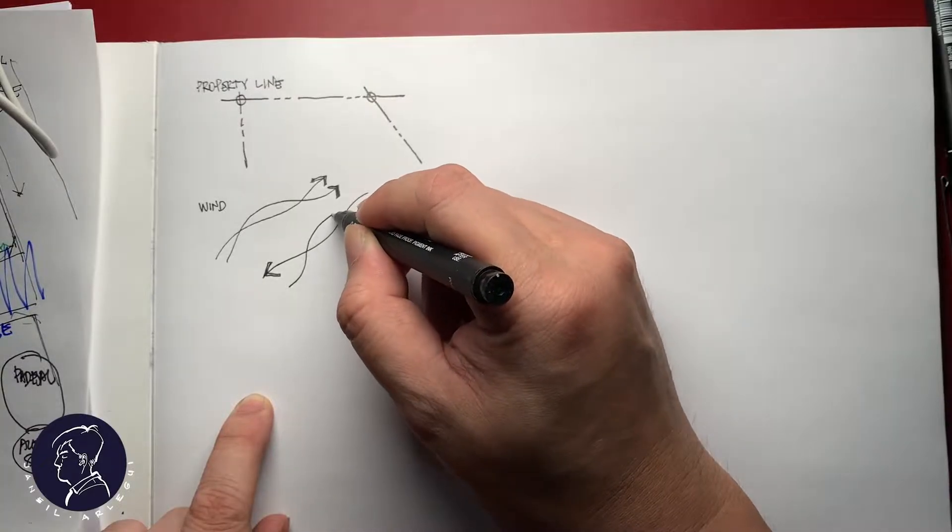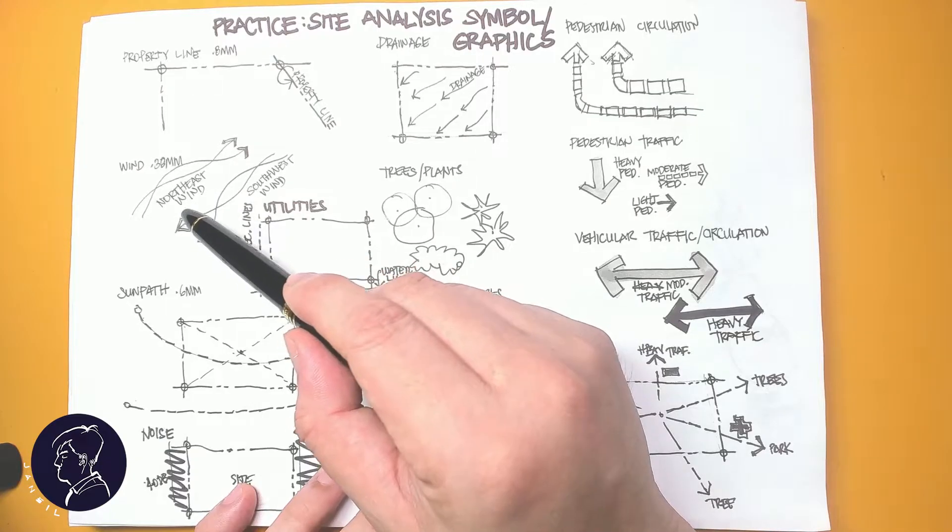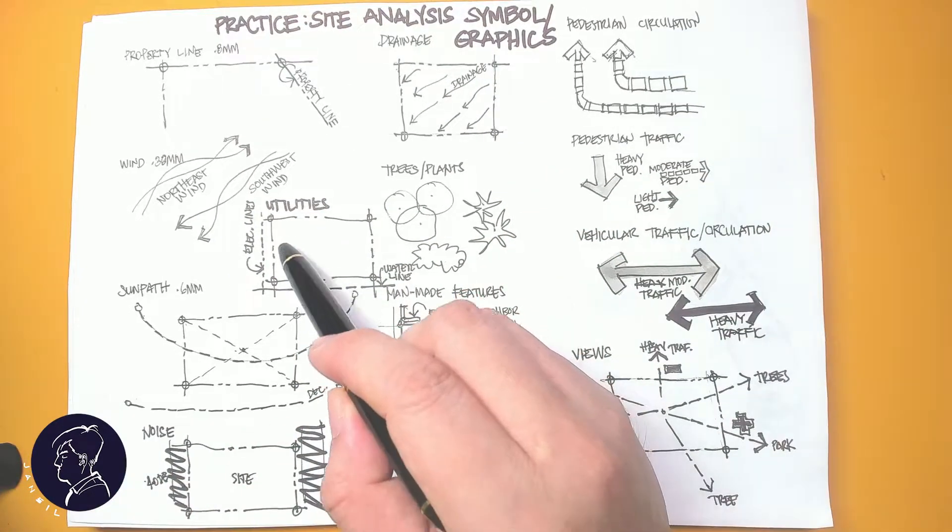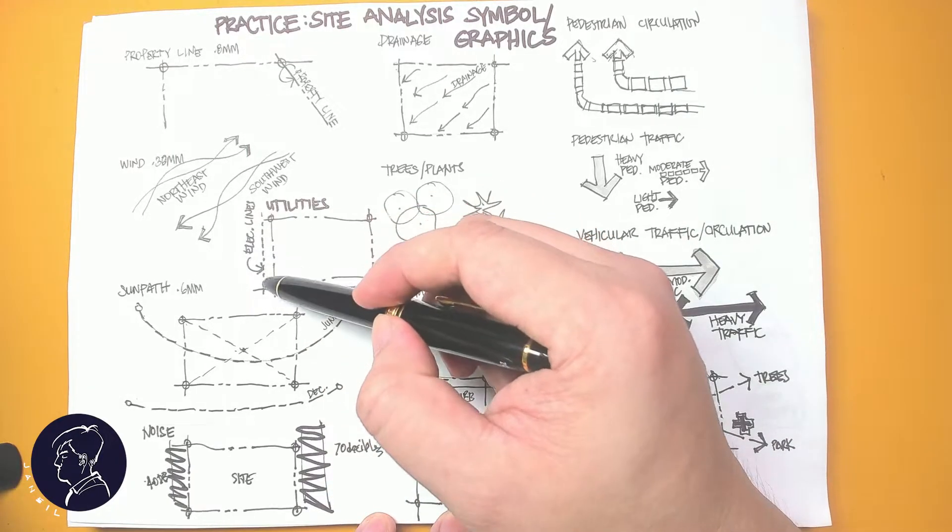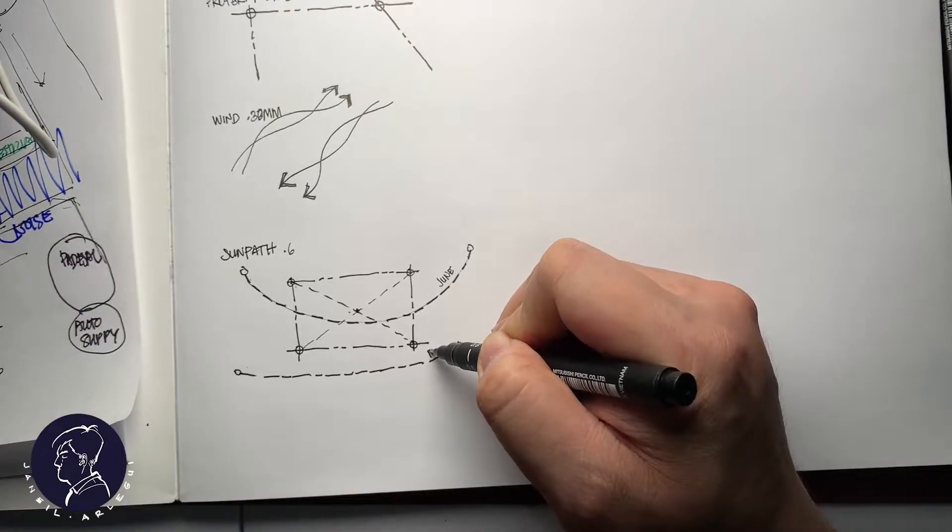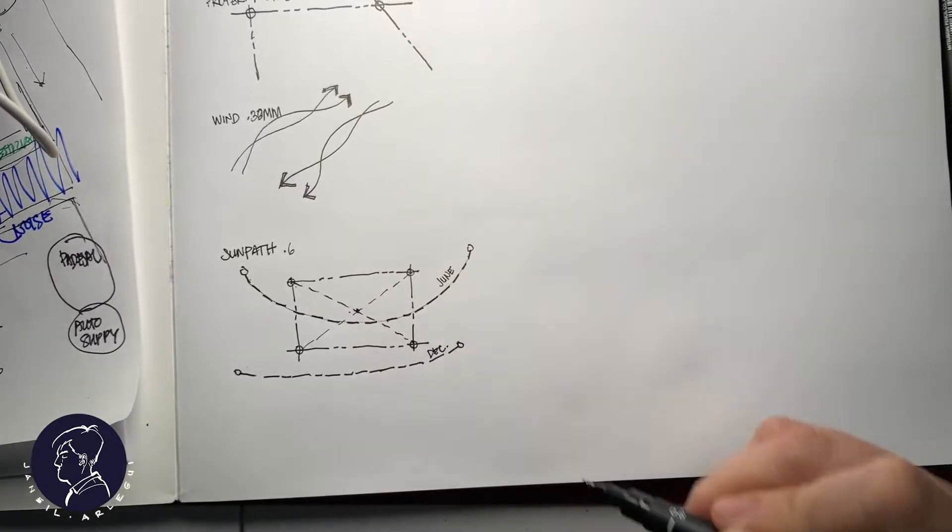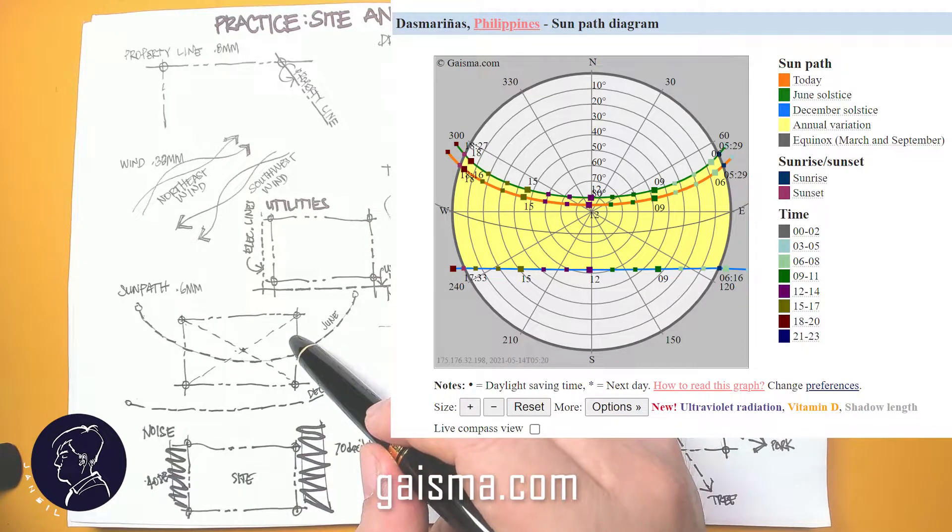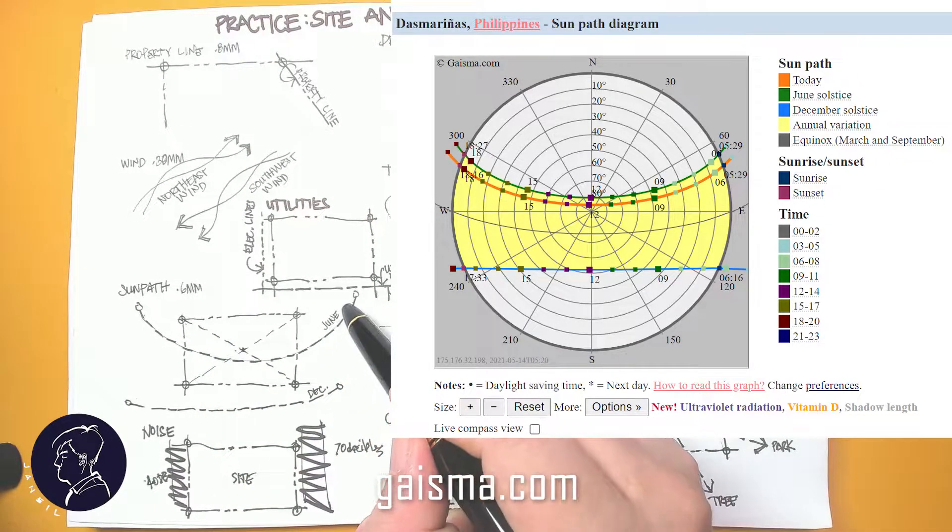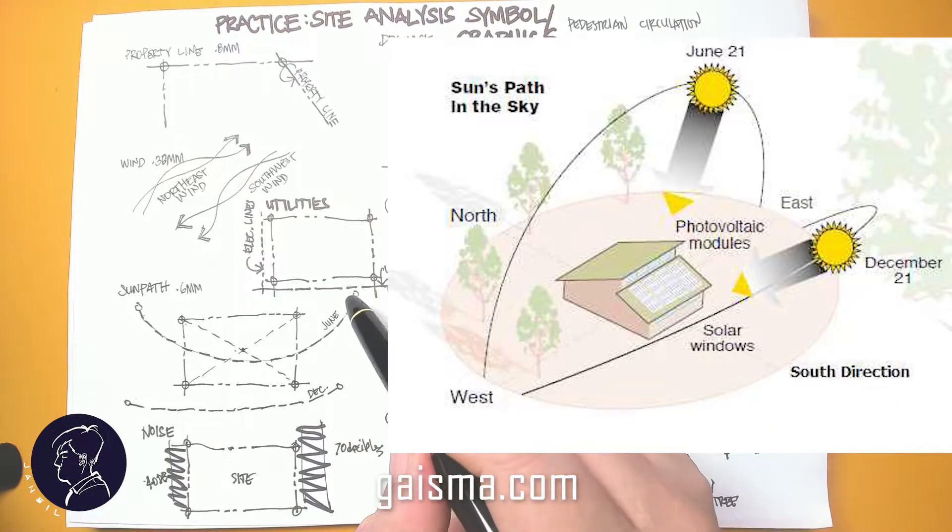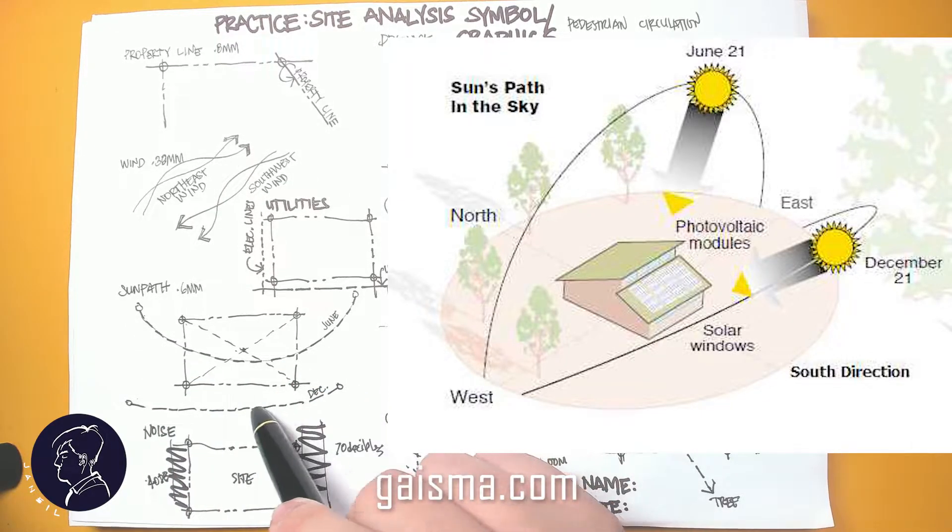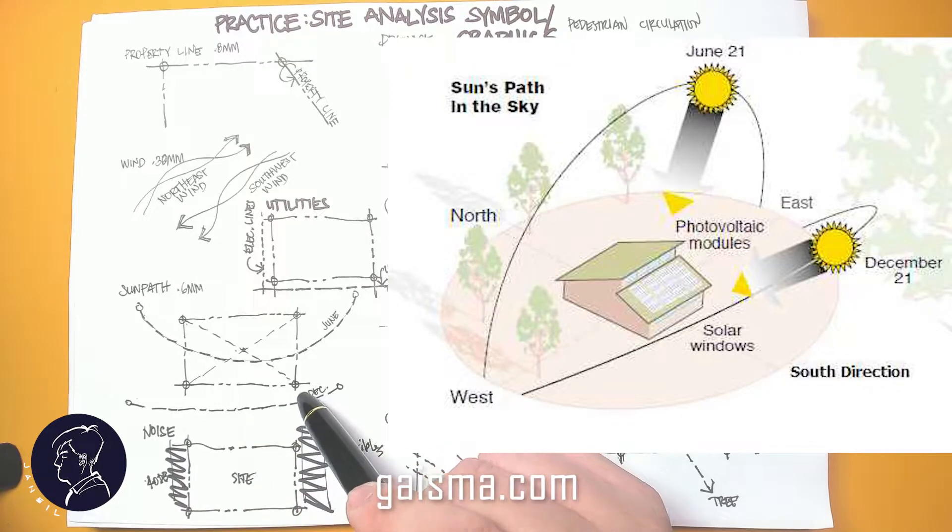And then the winds are normally here in the Philippines, which are the northeast and southeast monsoon winds. Utilities, if you gather them like power lines. Sun paths, this is very important. You can go over to the internet and find out the sun path for this particular location. I've drawn in what is the summertime sun path from the sunrise to the sunset. And during the December or winter time, this is the sun path, which is more to the south.